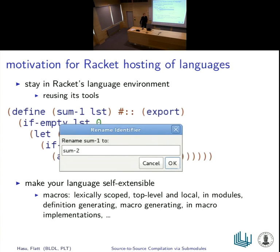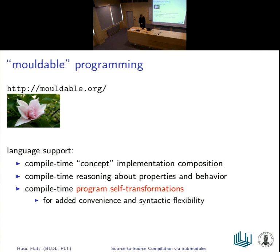We can implement a source-to-source compiled language, but why would we want to make it a Racket-based language? One benefit is that if it's a proper embedding, we can use existing Racket tools to a large extent — we heard about DrRacket and refactorings yesterday. Particularly in Racket's case, one motivation might be that we want to make our language self-extensible by exposing the Racket macro system, which is quite a capable macro system. That's the primary motivation for our group, which is working on moldable programming, and this can use some language support revolving around compile time.